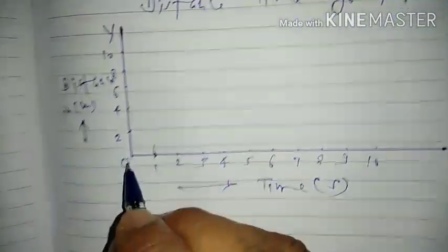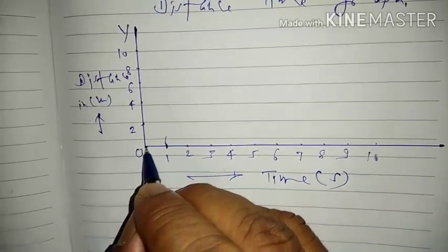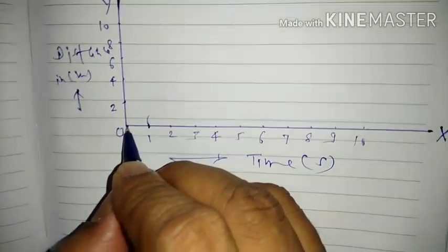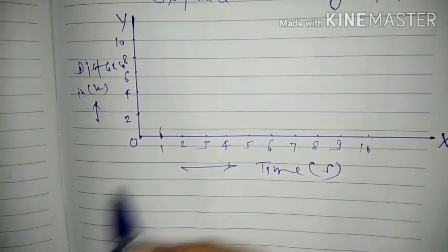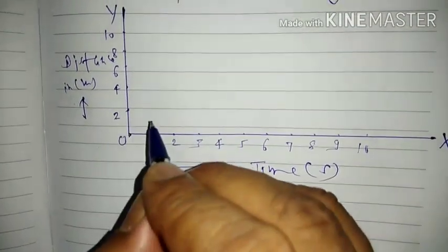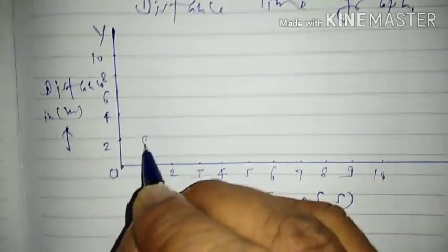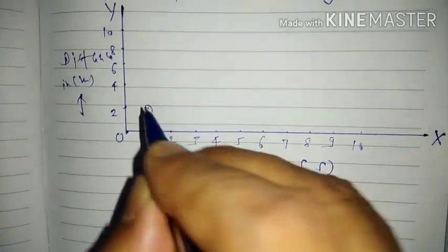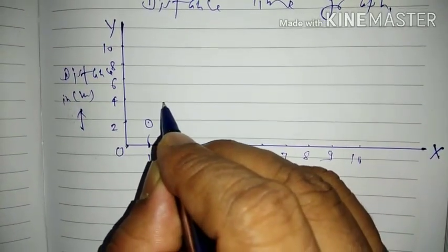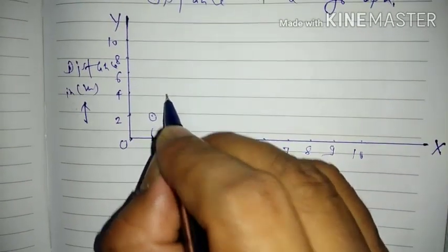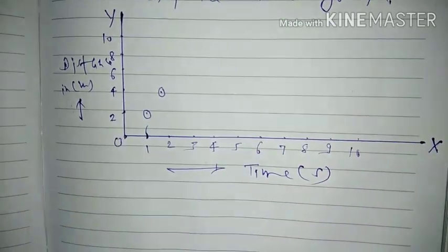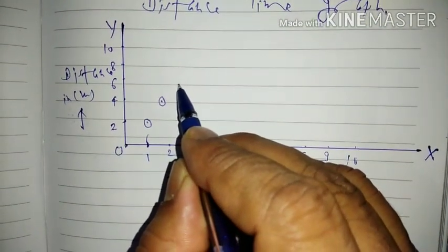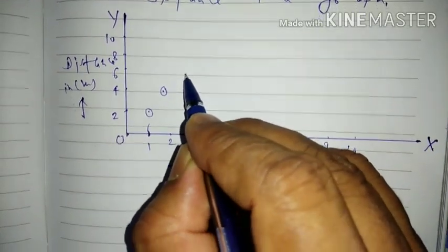Suppose if time is zero, then the distance of any object is also zero, so this origin gives us the (0, 0) point. After one second, if the distance of the object is two meters, we find this point. After two seconds, the distance of the object is four meters from the reference point, so we find this point. After three seconds, if the distance is six meters, we find this point.